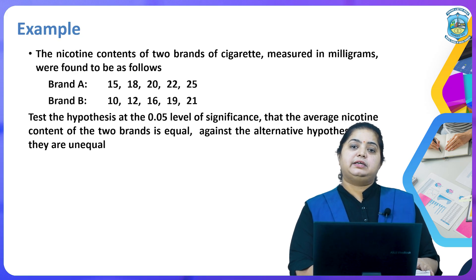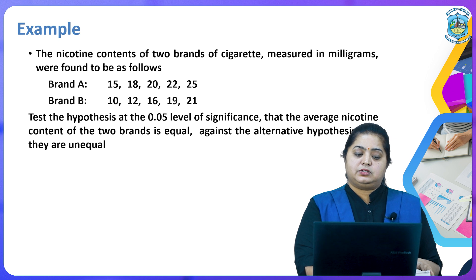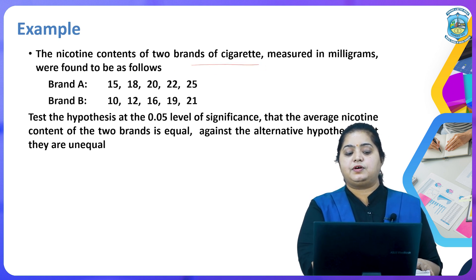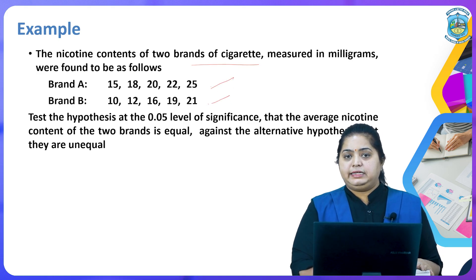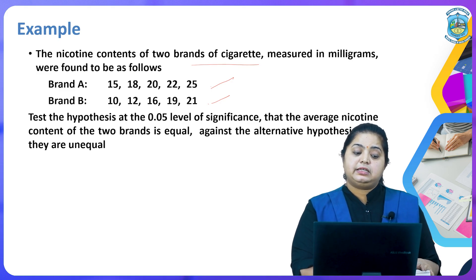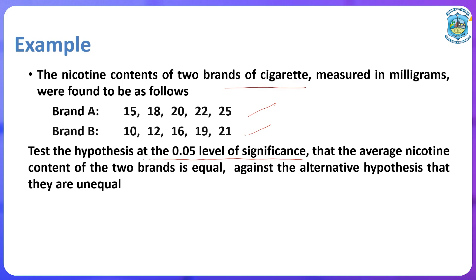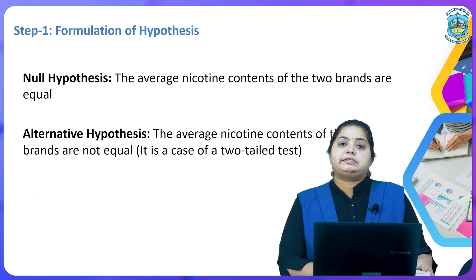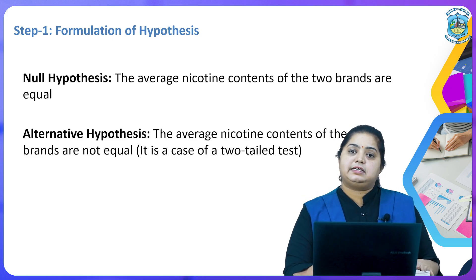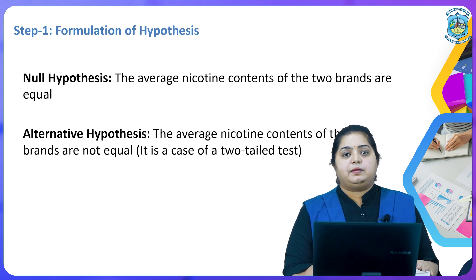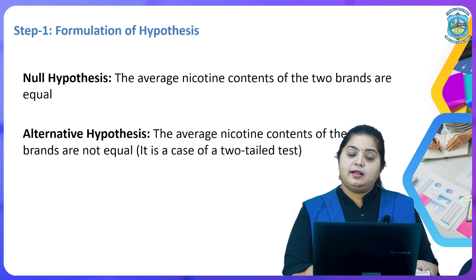Let us understand the U-test with the help of an example. The question is: the nicotine content of two brands of cigarettes, measured in milligrams, were found to be as follows. These are the raw data for Brand A and Brand B. The question asks us to test the hypothesis at 0.05 level of significance that the average nicotine content of two brands is equal — this is the null hypothesis — against the alternative hypothesis that they are not equal. The very first step to solve any statistical hypothesis testing problem is to form the hypothesis.